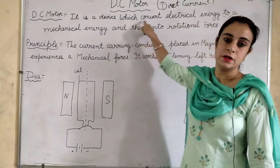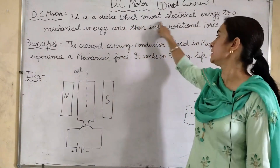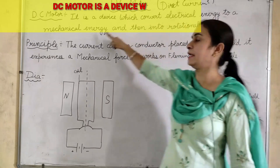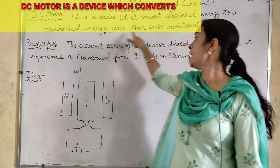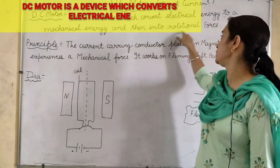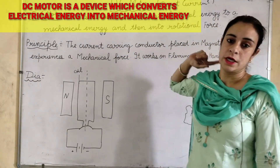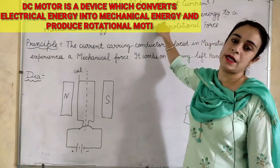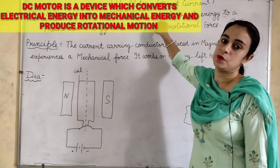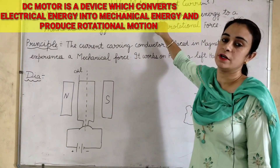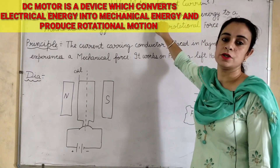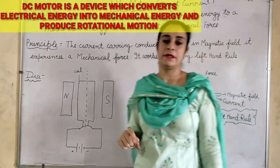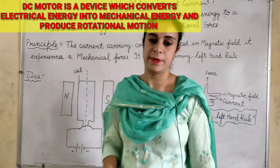A DC motor is a device which converts electrical energy into mechanical energy and then into rotational force. It means that electrical energy converts to mechanical energy and it is called a DC motor. I will explain it in a small experiment.